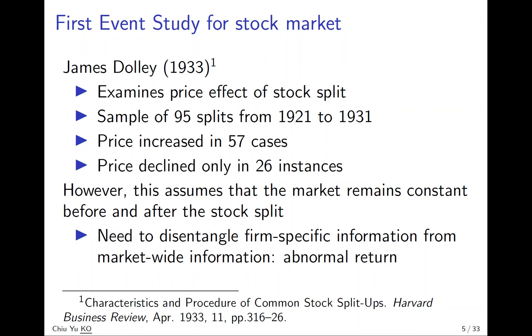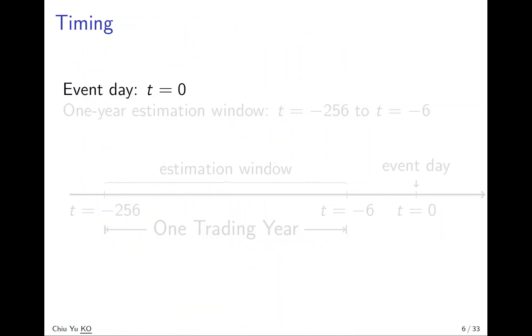To estimate abnormal return, we need to talk about math first. We first mention some notation on timing. Assume an event day is a one-day event, so we consider t equals zero as the event date.